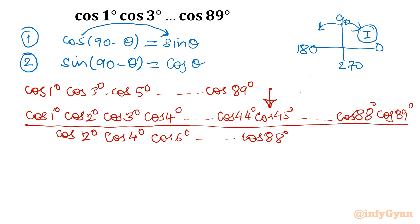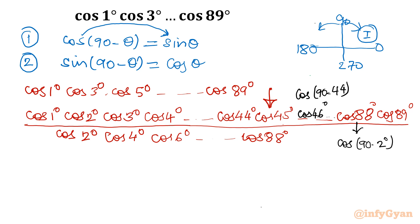Now I will focus only on cos 45°, the central middle term, whose value we know is 1/√2. After that, starting from cos 46°, I will apply the complementary identity: cos 46° = cos(90° − 44°), cos 88° = cos(90° − 2°), and cos 89° = cos(90° − 1°). So every angle after cos 45° will be converted from cosine into sine.